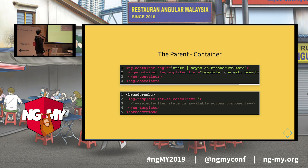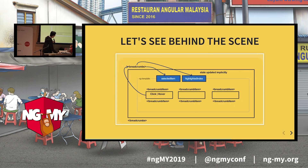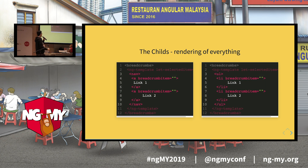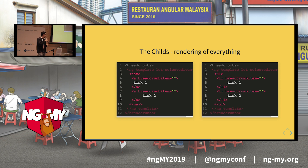As you can see here, the parent container is the one who provides the container. For example, the last selected item is the state that will be used by the content of the breadcrumbs. The difference between compound components and others is that even though we have two versions of the breadcrumbs, we keep reusing the same container. The content is different because the implementer decides how the breadcrumbs look and feel on the screen.